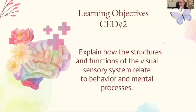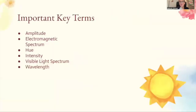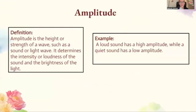Now let's look at CED question number two: explain how the structures and functions of the visual sensory system relate to behavior and mental processes. We're just going to look at a few words for this section, and I'll give you the definition and example like last time.